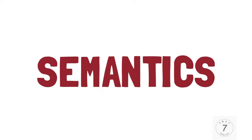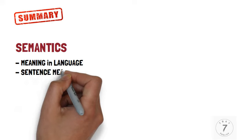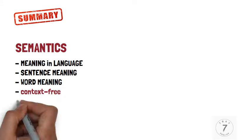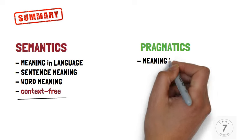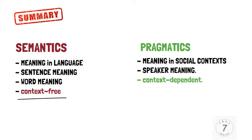In summary, semantics is the study of meaning in language — sentence meaning or word meaning — and it is context-free. Pragmatics considers the meaning in social contexts, or speaker meaning, and it is context-dependent.